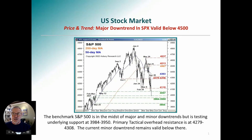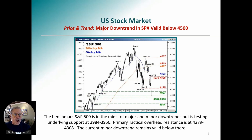Let's begin with a general view of the S&P 500. This is a daily chart of the S&P 500 going back to 2021. We put a 200-day and a 50-day moving average in there — orange on the 200, blue on the 50 — to give the chart some structure so we can see what the trend is. We're below both moving averages, pretty obviously in a downtrend. The important takeaway is that we're sitting right on the support level, 3,984 to 3,950.